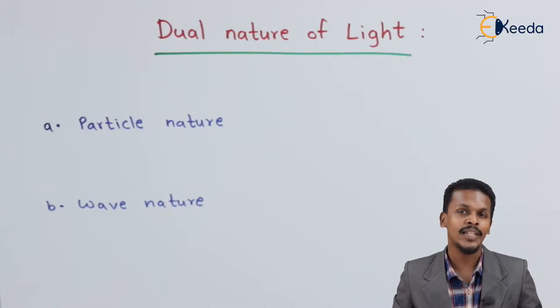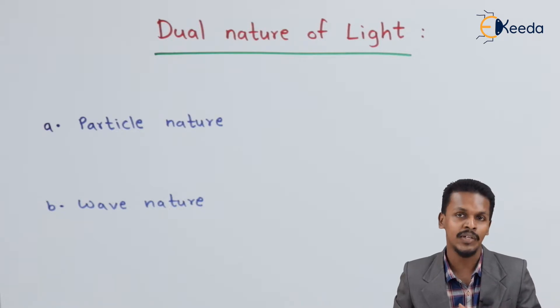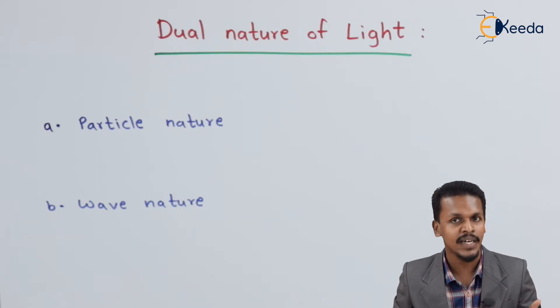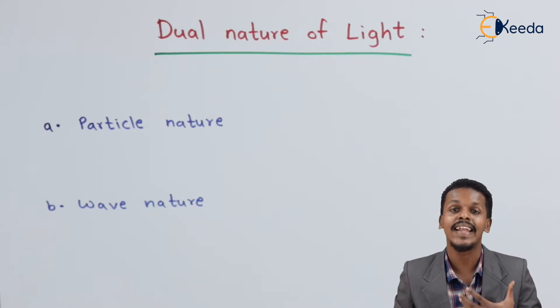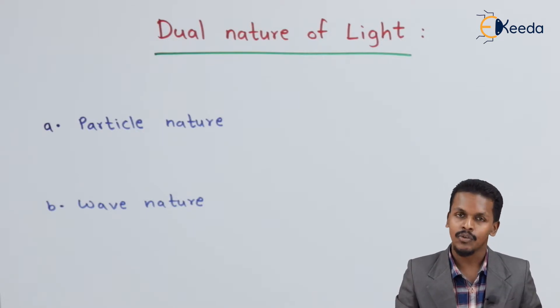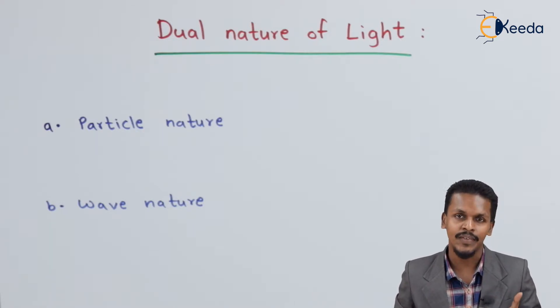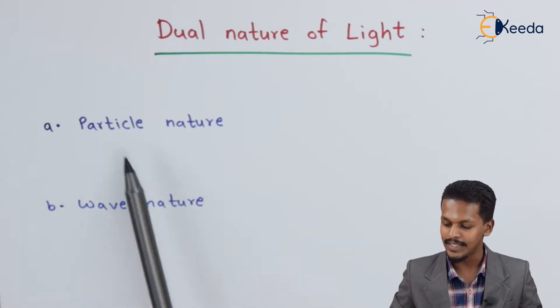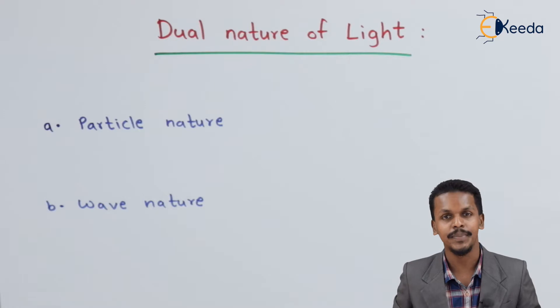Here I am going to talk about how light has a dual nature — that is, light can behave as a particle as well as light can behave as a wave. Let's start with the first one, that is the particle nature.